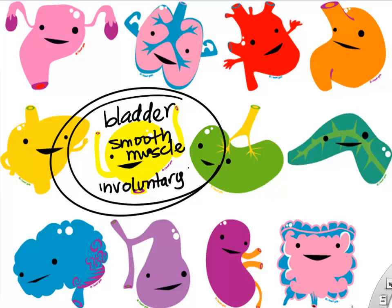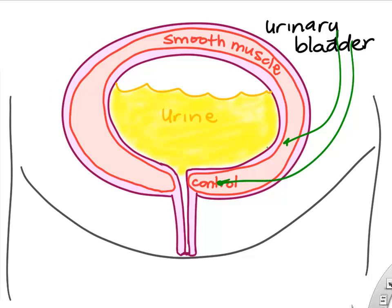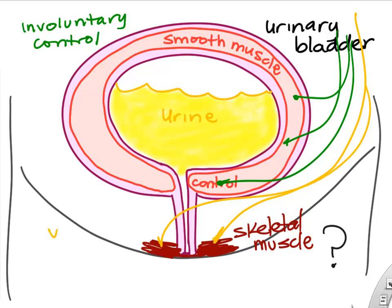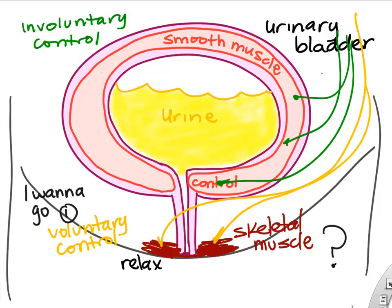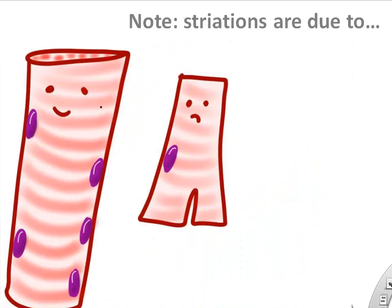The bladder is a good example of involuntary control. Most of us would say we control when we urinate, but here's the key: the smooth muscle of the bladder is controlled by the brain and spinal cord involuntarily. However, you do control a sphincter — a skeletal muscle ring around the urethra. When you decide to urinate, you voluntarily relax that skeletal muscle, which then initiates an involuntary reflex contraction of the bladder, pushing urine out.